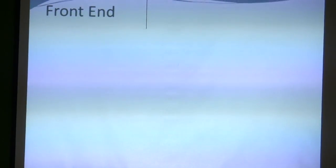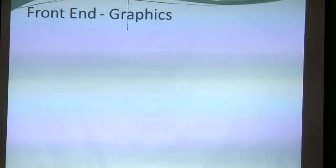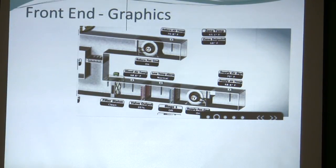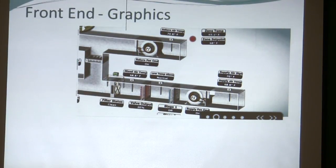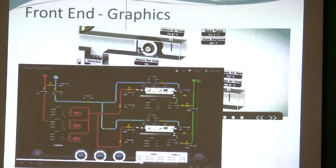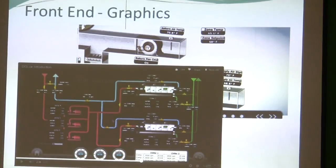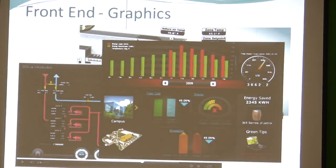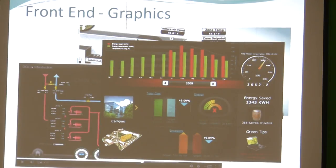All of this resides in the Jace. Now let's get into graphics. You can go in and see your duct system, zone temp, return air temp, whether the fan is on, mixed air temp — all that stuff. You can see your chiller. This is trending, and what a lot of guys are doing now is going into a new building, installing a meter and a front end.